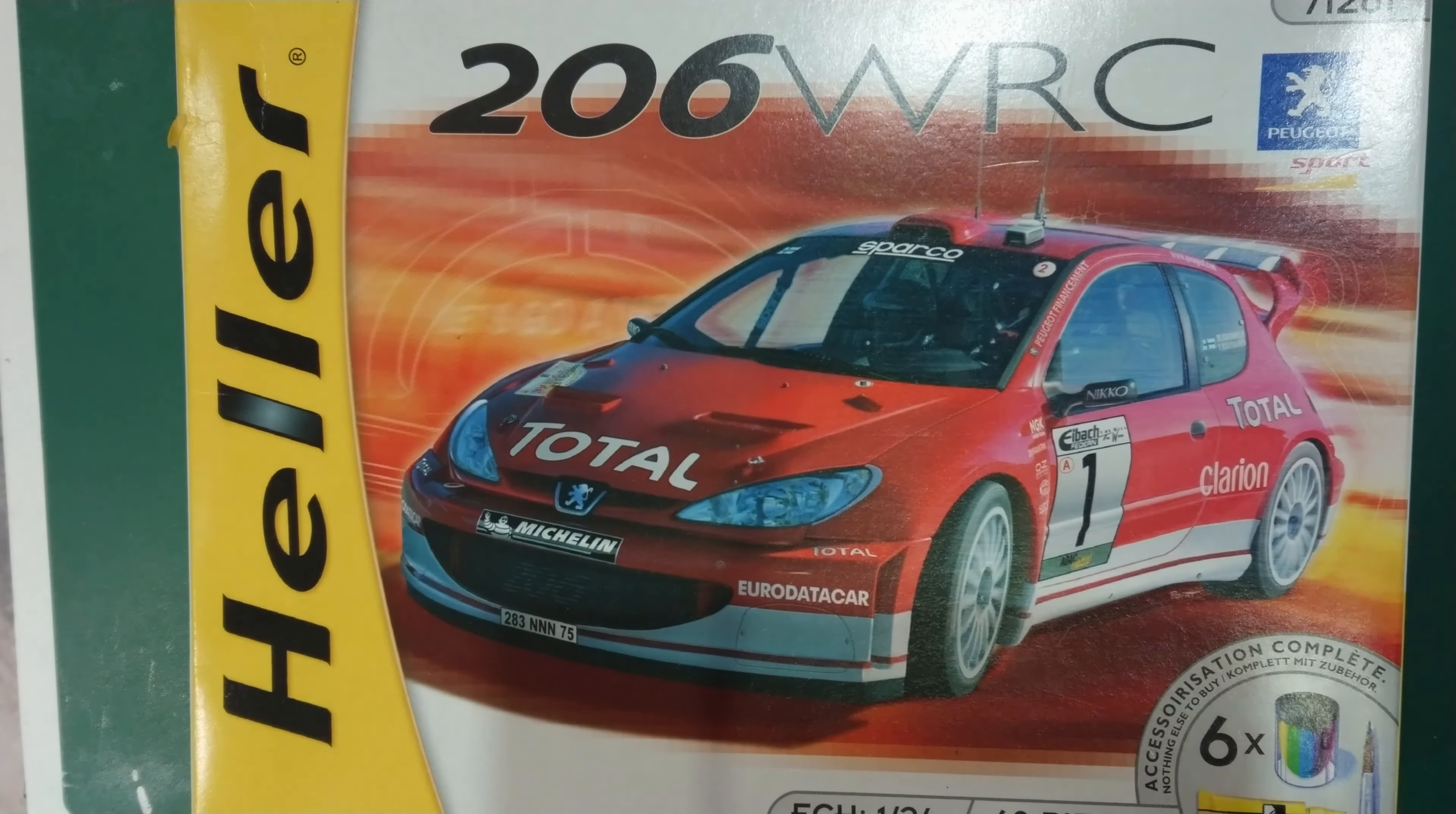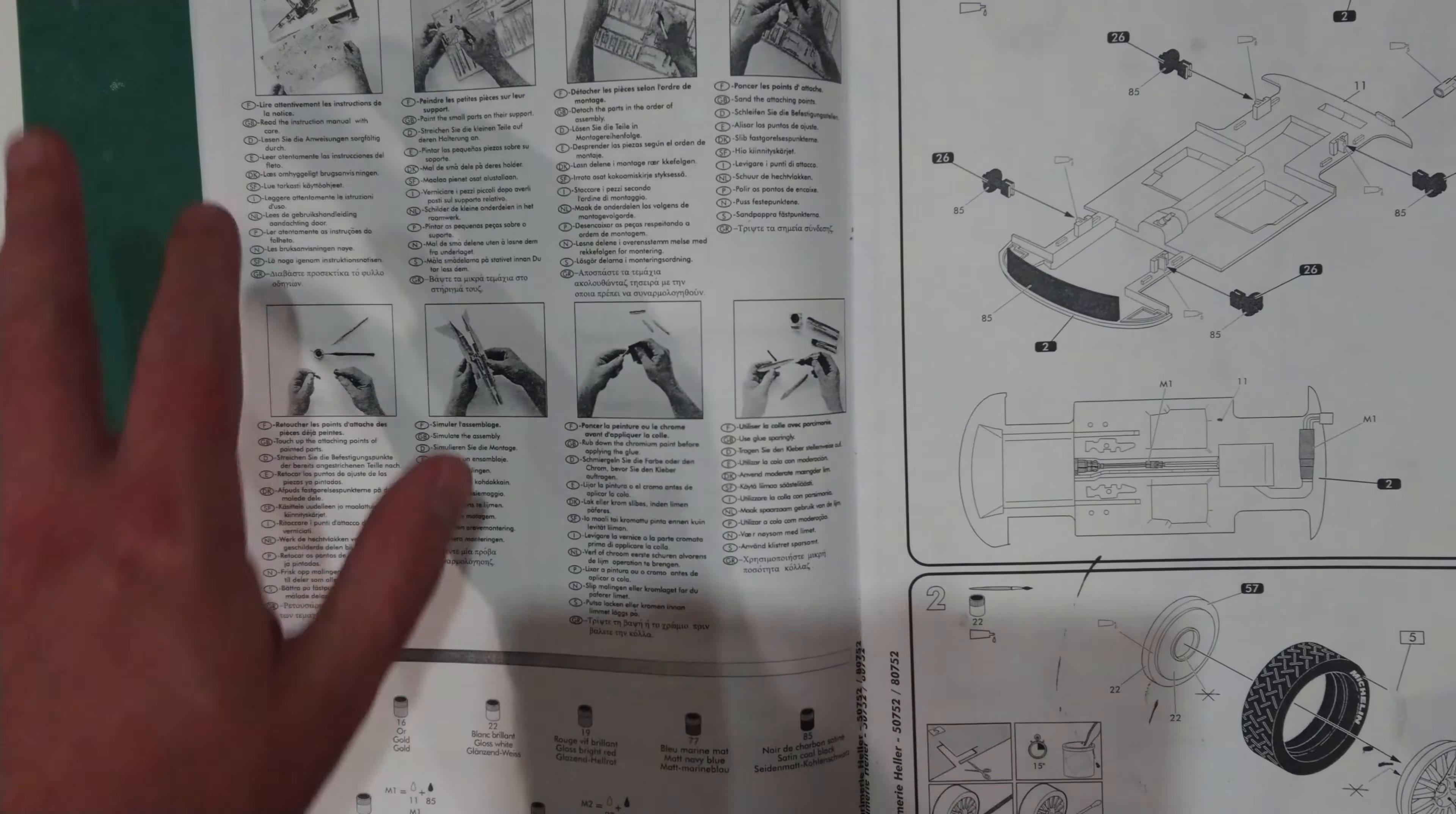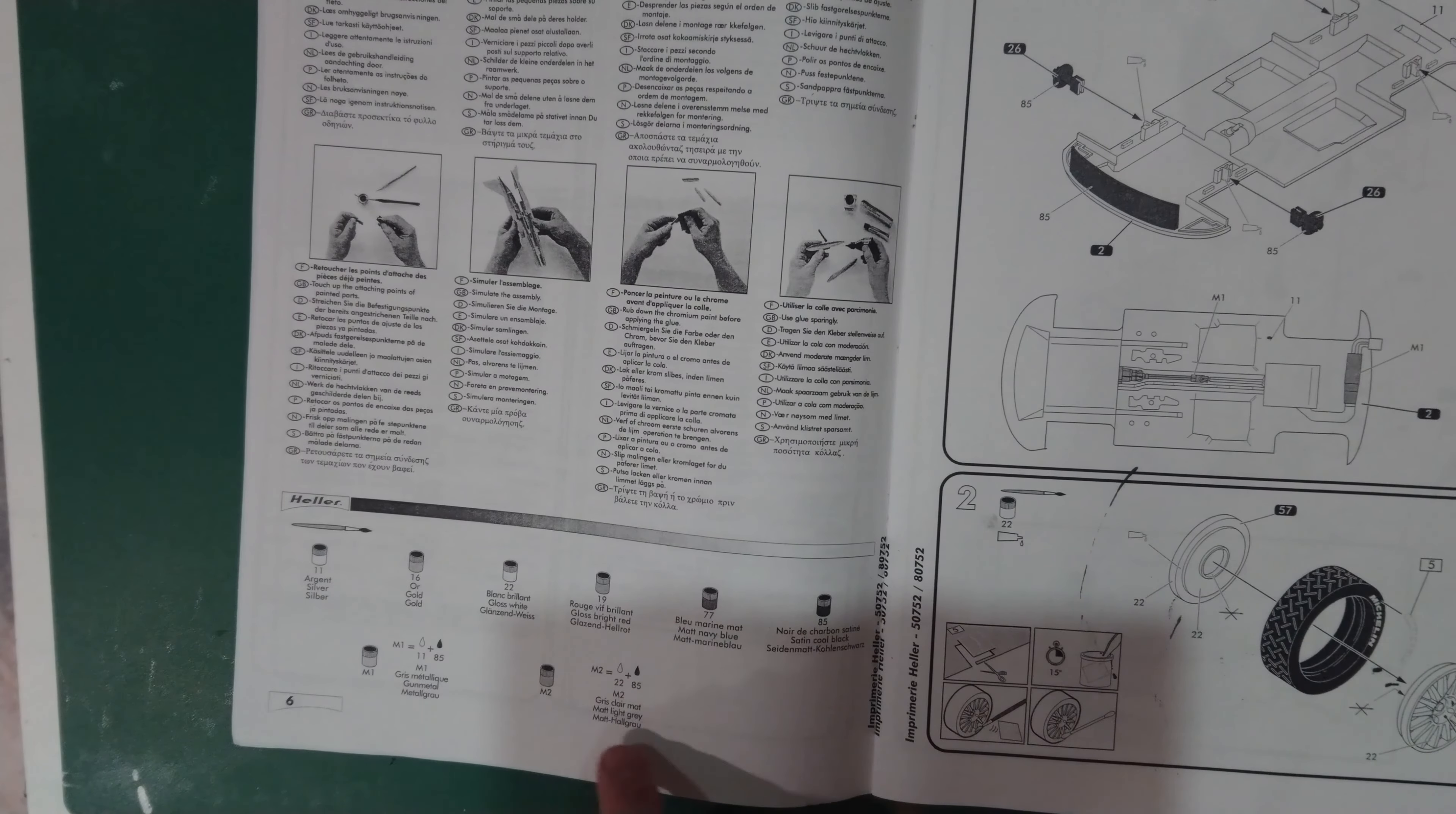Now getting onto the kit, we'll start by looking at the instructions. The instructions are in black and white, fairly basic. At the beginning you've got information about the car itself and in eight different languages. It's quite comprehensive. And then you move on to the instructions themselves, safety guidelines, things like that. Now the paints that suggested down here, I'm pretty certain are Humbrol paints because they use the same codes and I know that Airfix, Heller and Humbrol have been associated with each other.